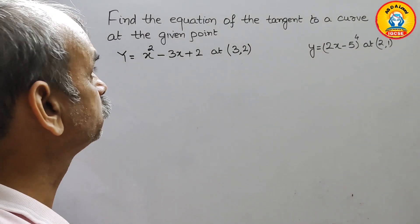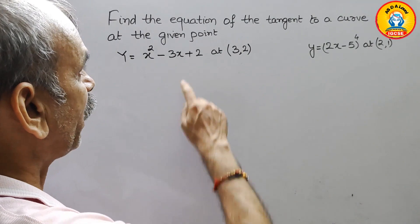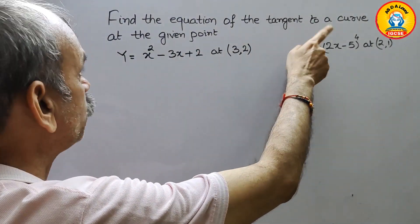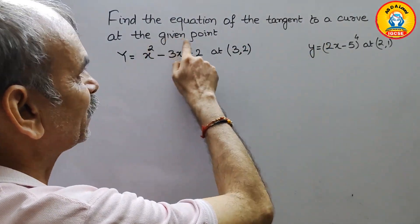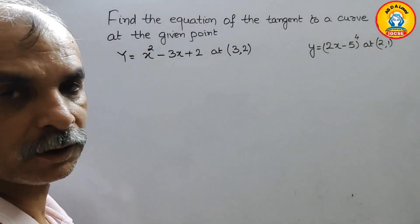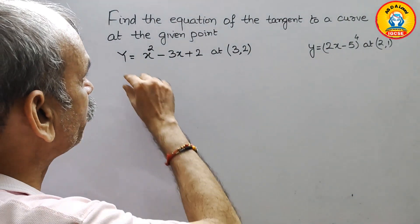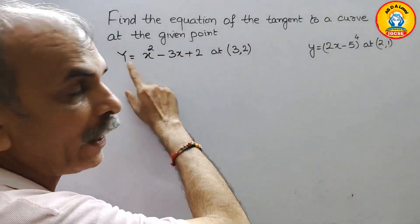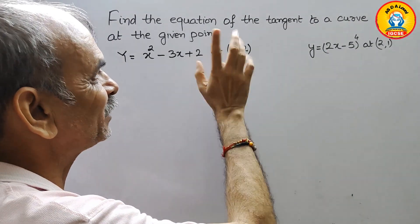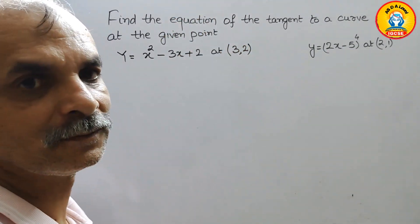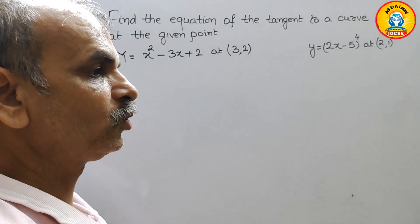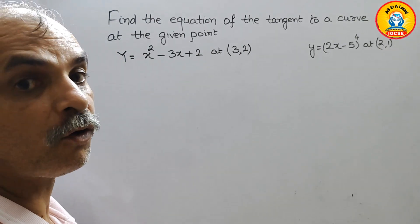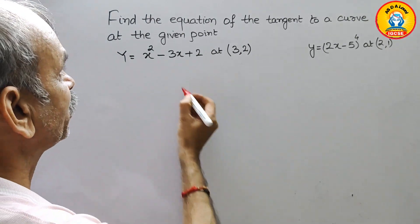Your question is: find the equation of the tangent to a curve at the given point. They have given the curve and the point. We have to find out the equation of the tangent.